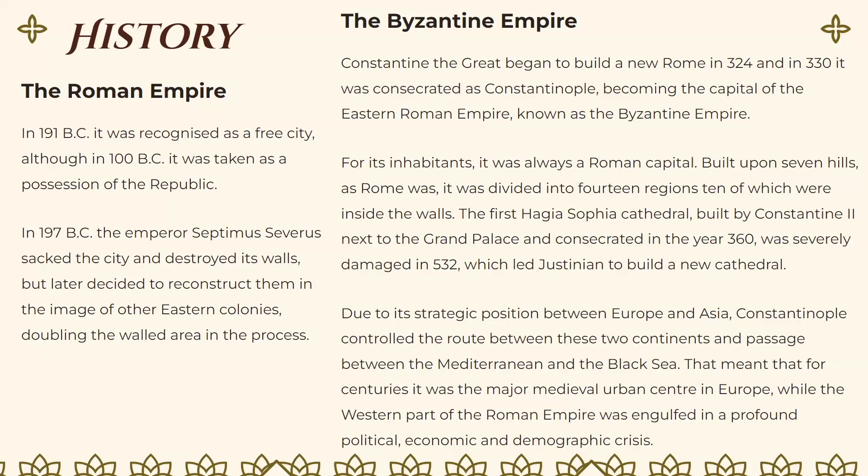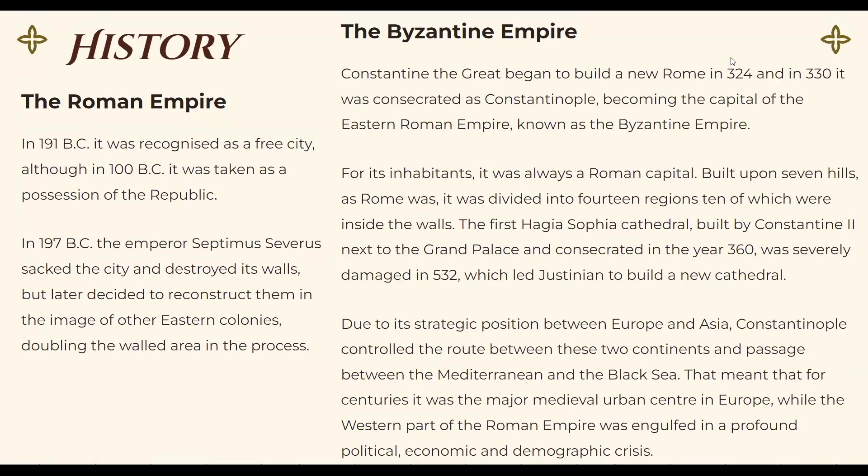Constantine the Great began to build a new Rome in 324, and in 330 it was consecrated as Constantinople, becoming the capital of the Eastern Roman Empire — known as the Byzantine Empire. For its inhabitants, it was also a Roman capital built upon seven hills, as Rome was, and was divided into 14 regions.